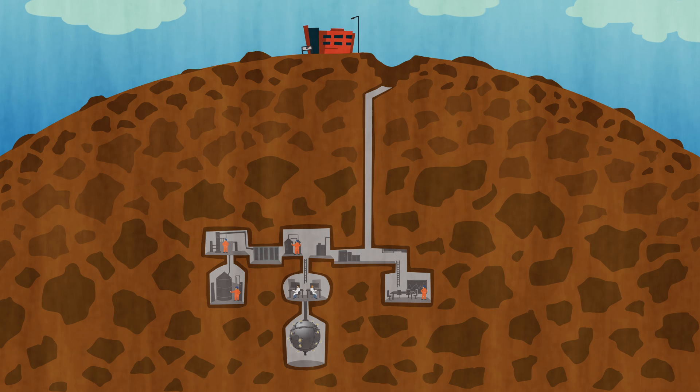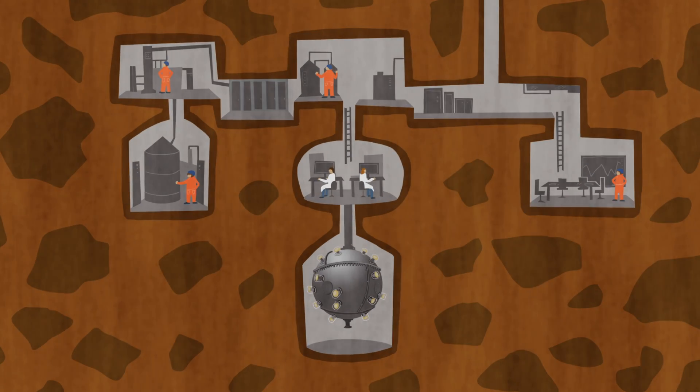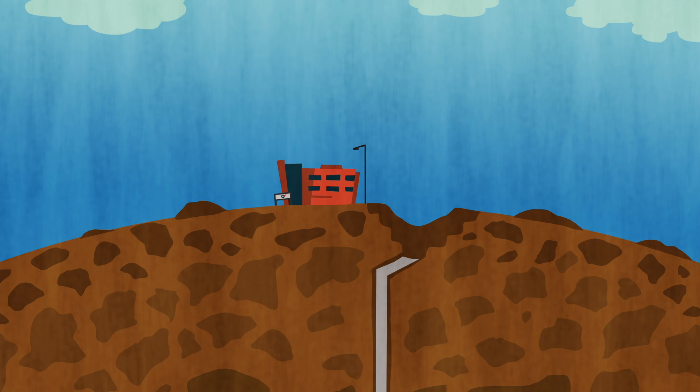To solve this problem, scientists have had to dig deep into the Earth. Dark matter experiments are set up in specialized underground labs, either in mines or inside mountains. The rock that makes up the Earth's crust works like a filter, absorbing radiation and stopping disruptive particles.